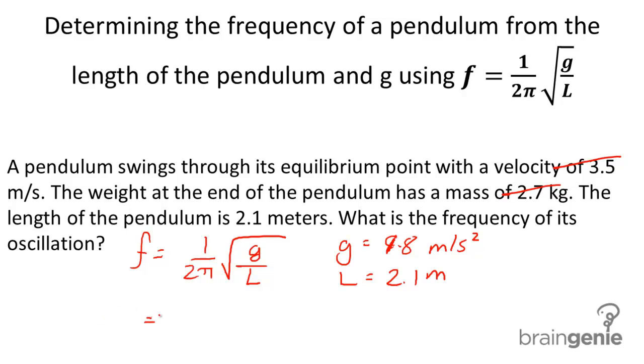Once we go ahead and plug in this information, we get 1 over 2 pi times 9.8 divided by 2.1, and we get a final answer of 0.34 hertz.